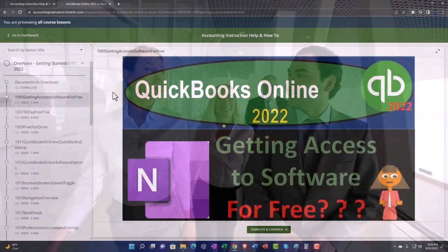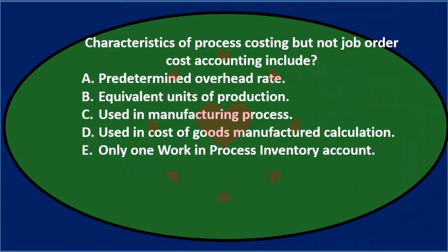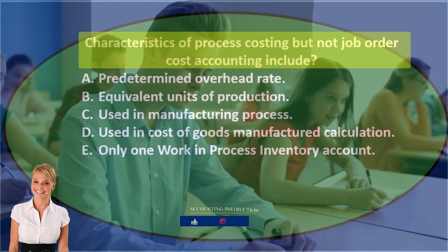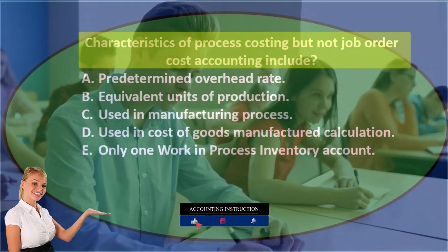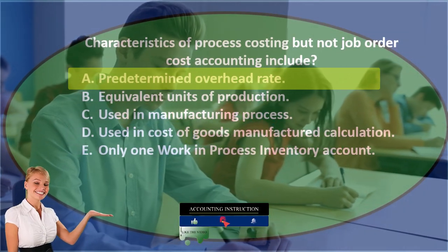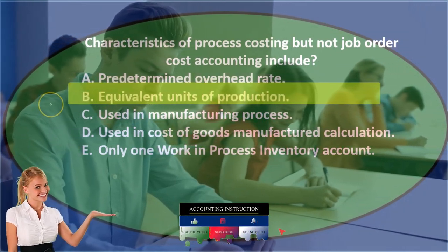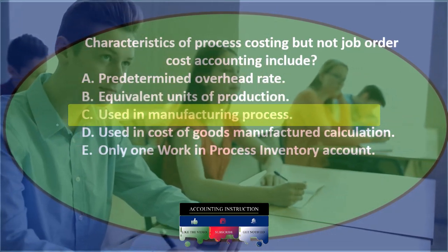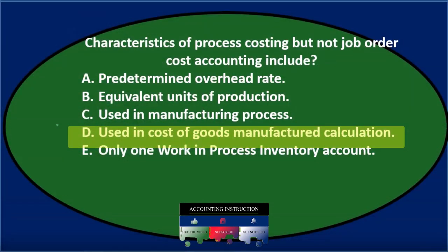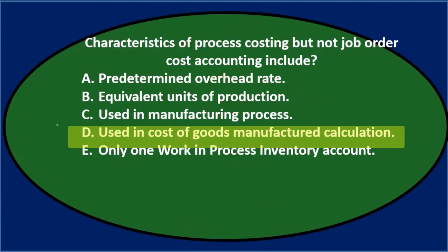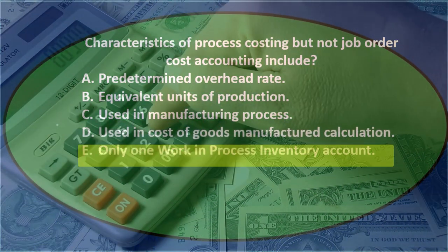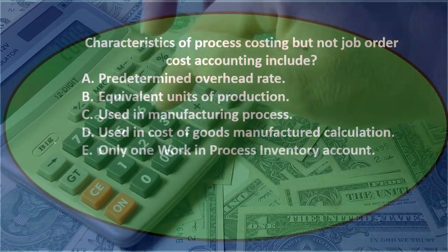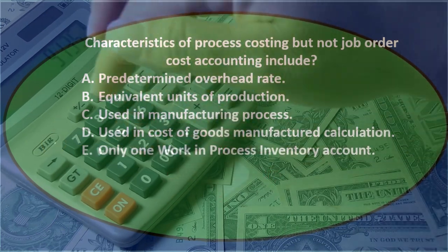First question: characteristics of a process costing but not job order costing include: A) a predetermined overhead rate, B) equivalent units of production, C) used in manufacturing process, D) used in cost of goods manufactured calculation, and E) only one work in process inventory account. Let's go through this using the process of elimination.